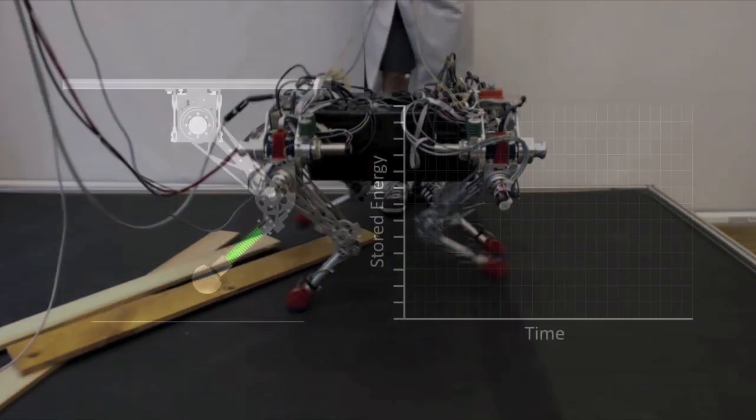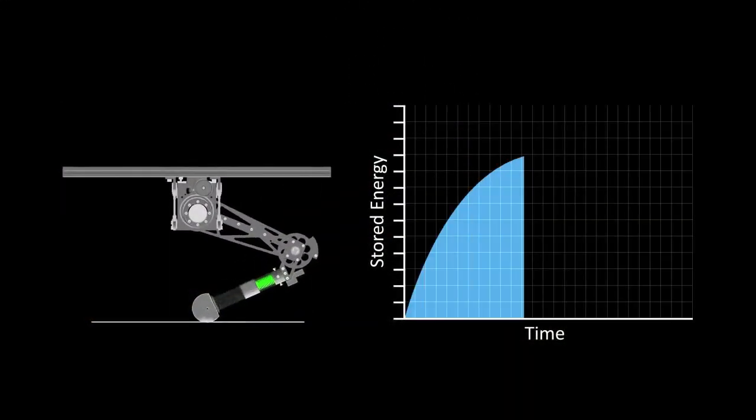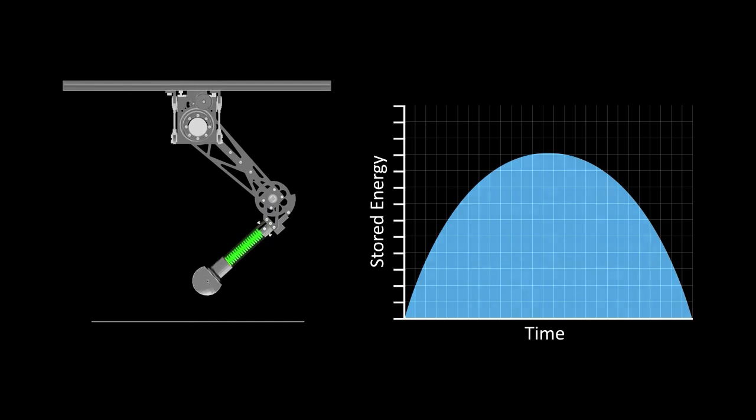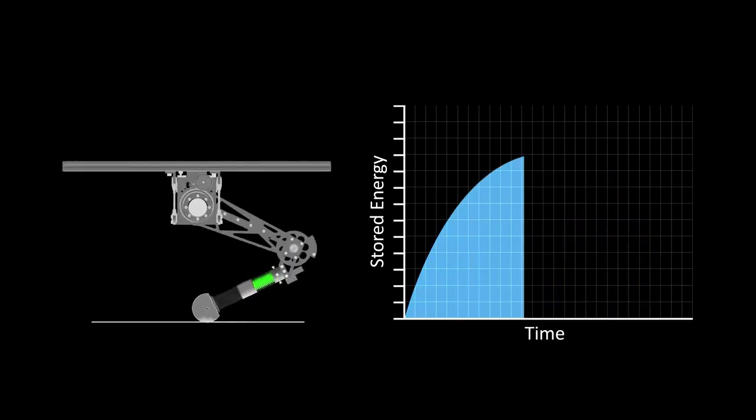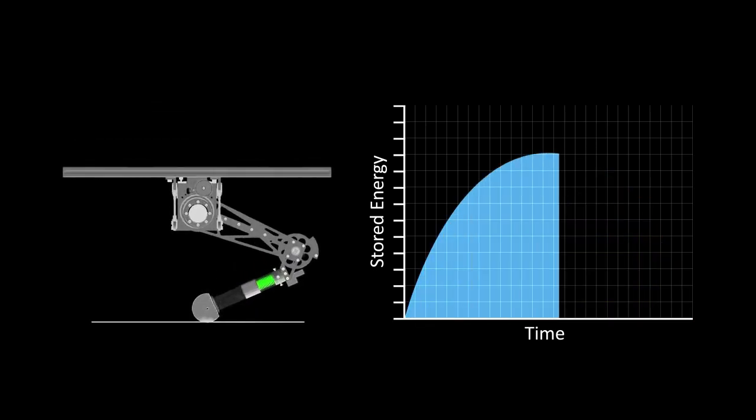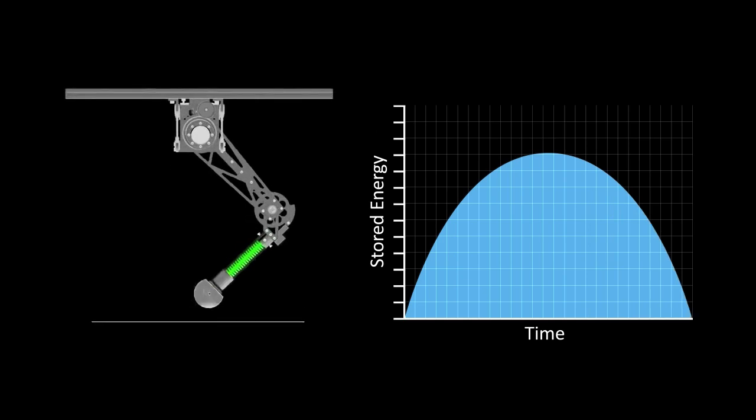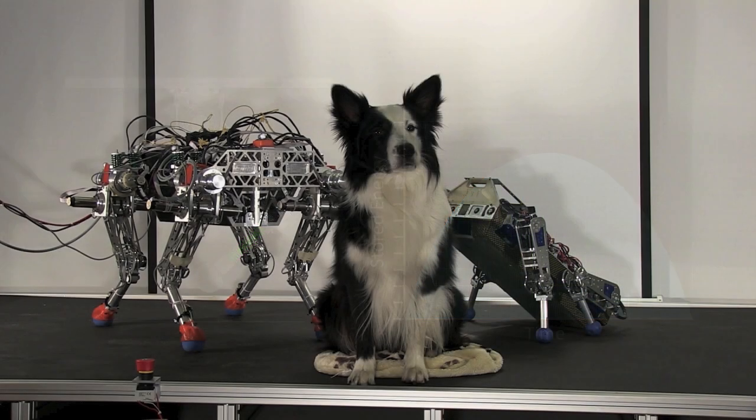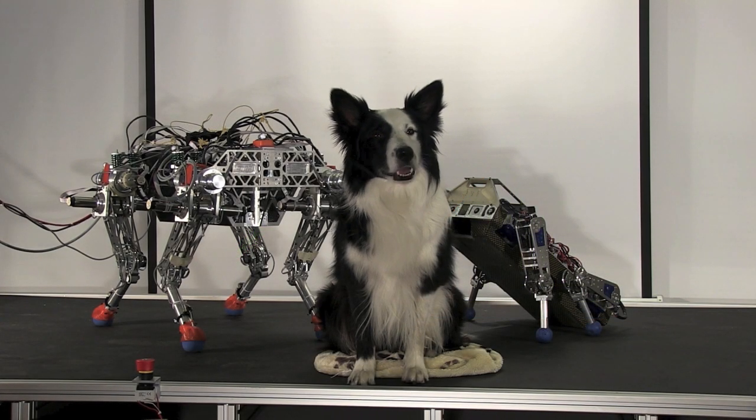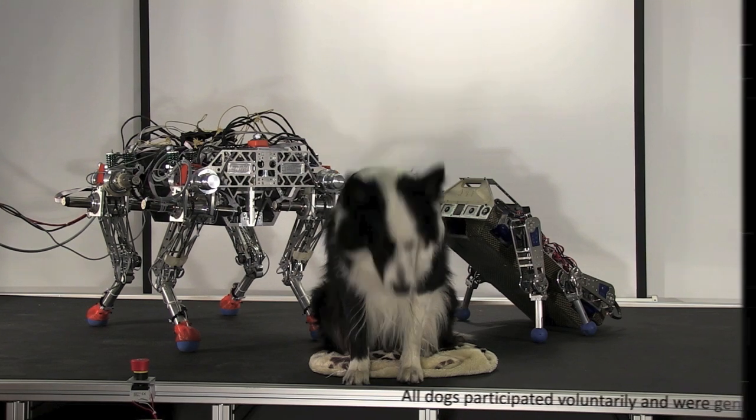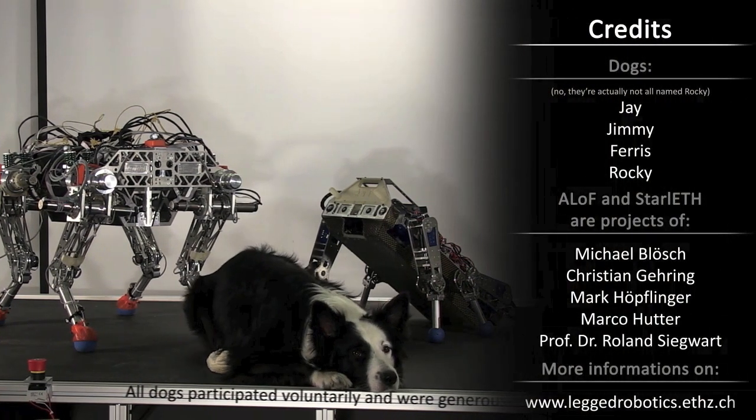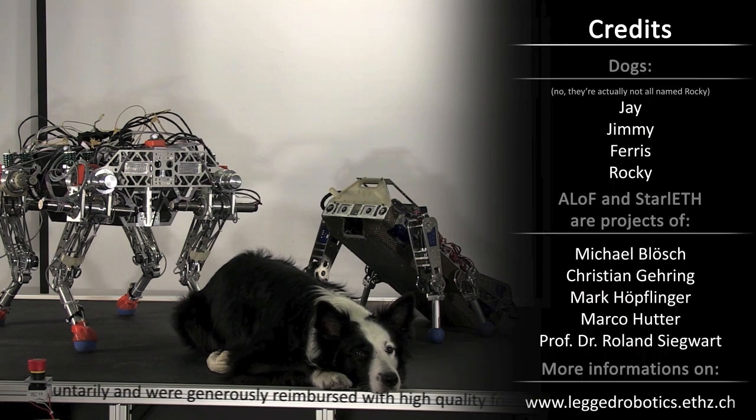In such maneuvers, the spring in series contributes to the passivity of the system. The springs in the joint are compressed after landing to store energy and released again before liftoff, increasing the running efficiency. Despite all these efforts, there's still a long way to go until legged robots will support us in our daily tasks.